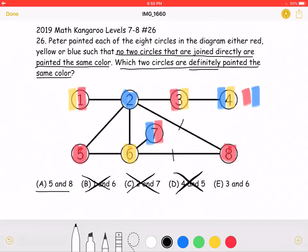And in answer choice E, the six is yellow, while the three could be red or yellow, which means that they're not necessarily the same. So the final answer is answer choice A, five and eight.